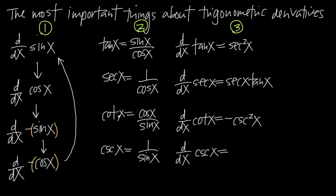Notice that tangent, secant, cotangent, and cosecant are all defined as fractions in terms of sine and cosine. So if we want to find the derivative of, for example, cosecant of x and can't remember it, we can say cosecant of x equals 1 over sine of x and use quotient rule to find the derivative.